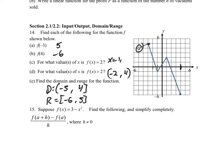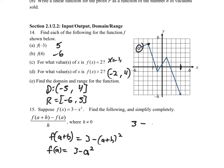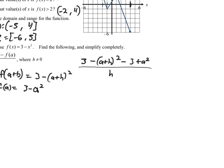For number fifteen, f(x) = negative 3 minus x squared. We need to find the difference quotient [f(a+h) minus f(a)] / h and simplify completely. First, f(a+h) = negative 3 minus (a+h) squared, and f(a) = negative 3 minus a squared. Plugging in: [negative 3 minus (a+h) squared minus (negative 3 minus a squared)] all over h.